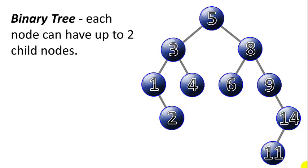In a binary tree, each node can have up to two child nodes, a left child and a right child.